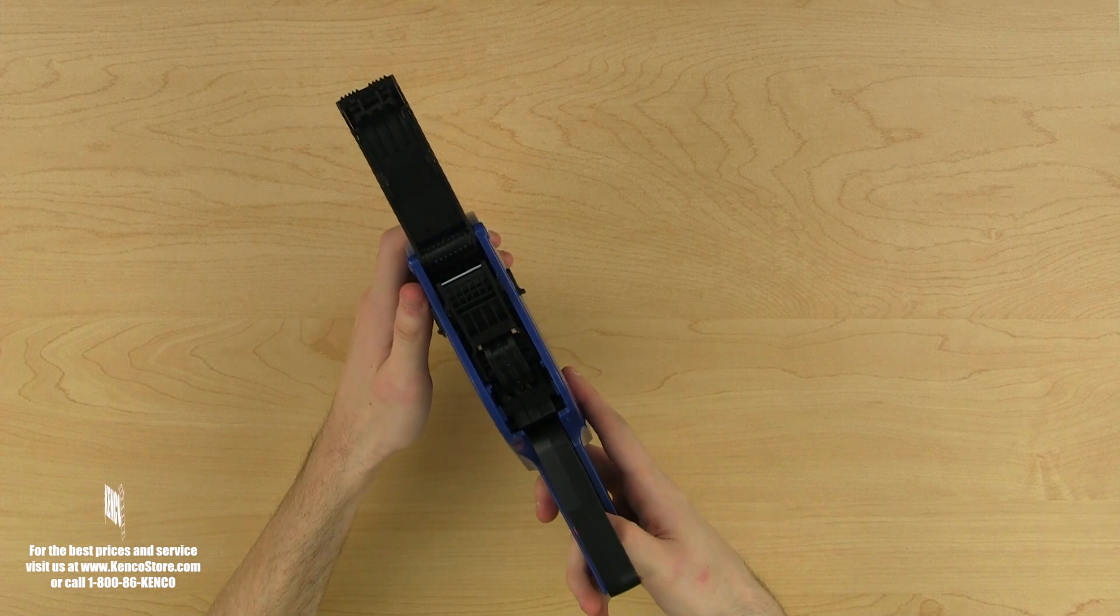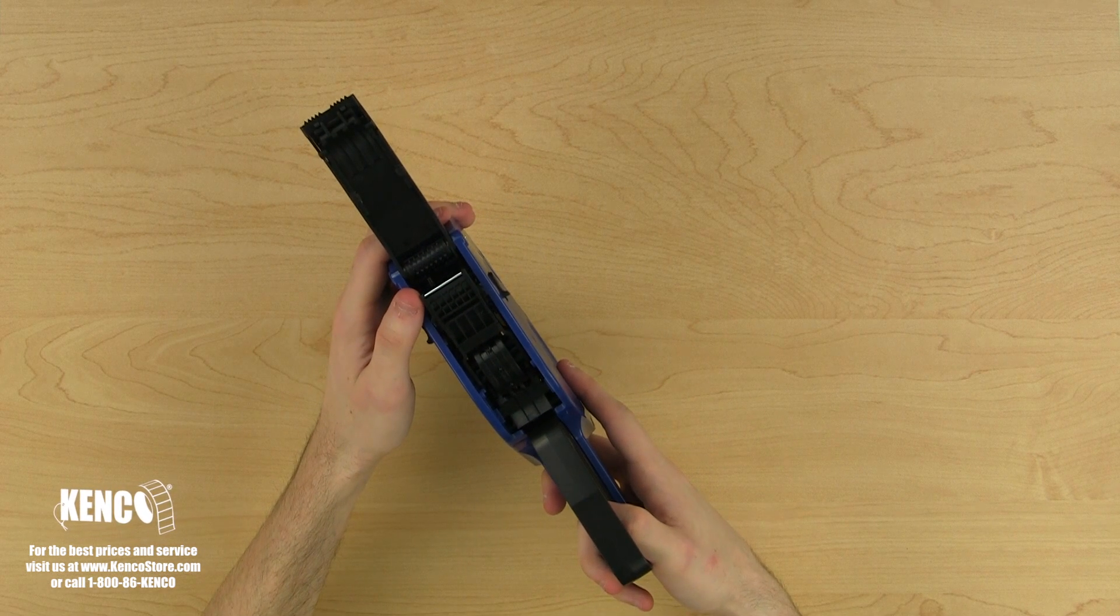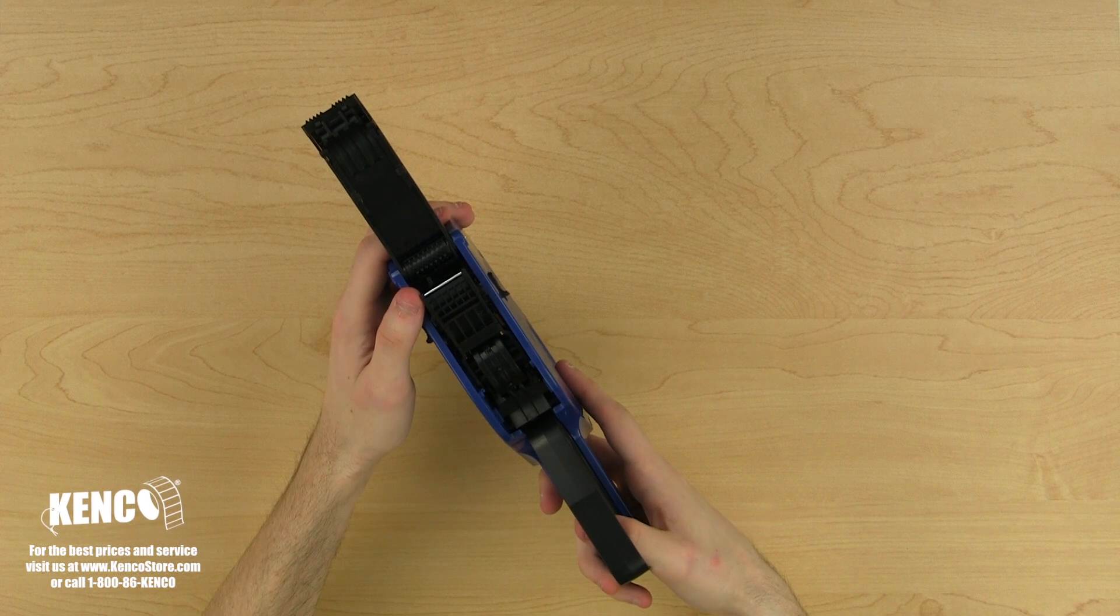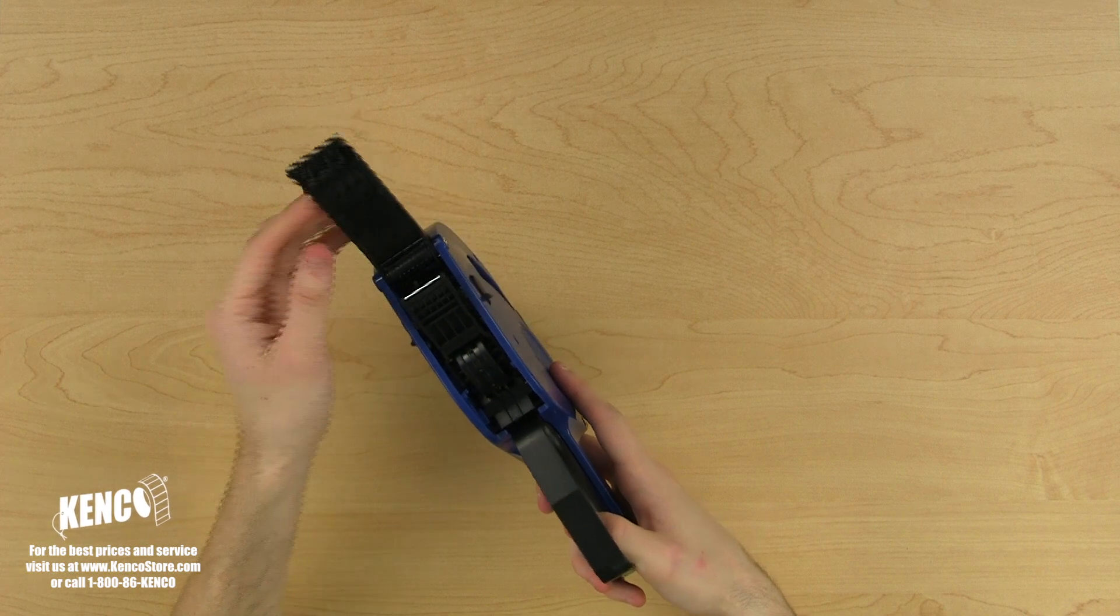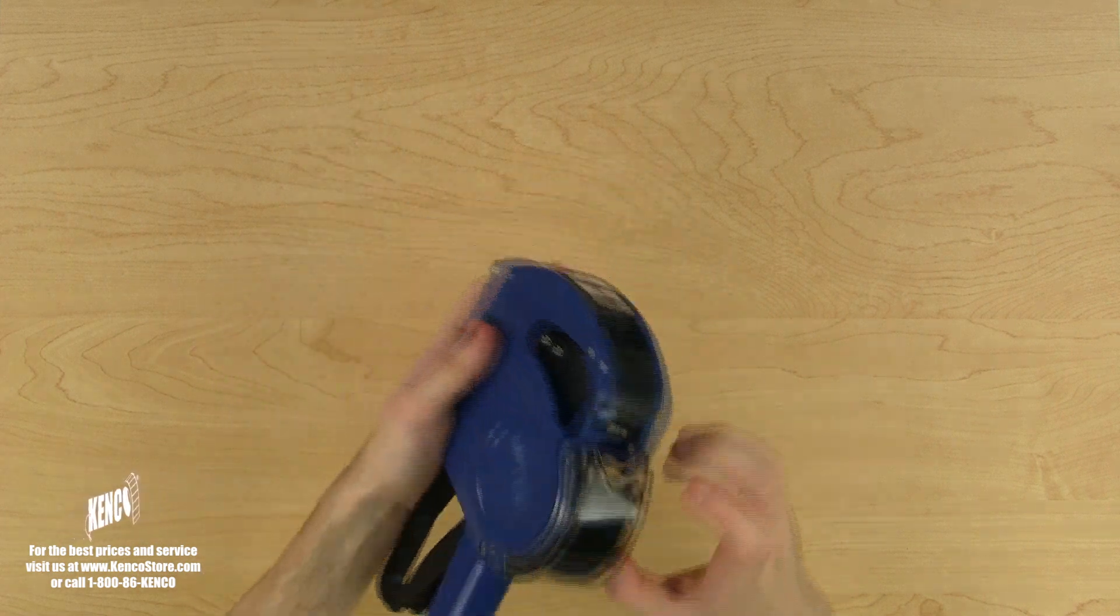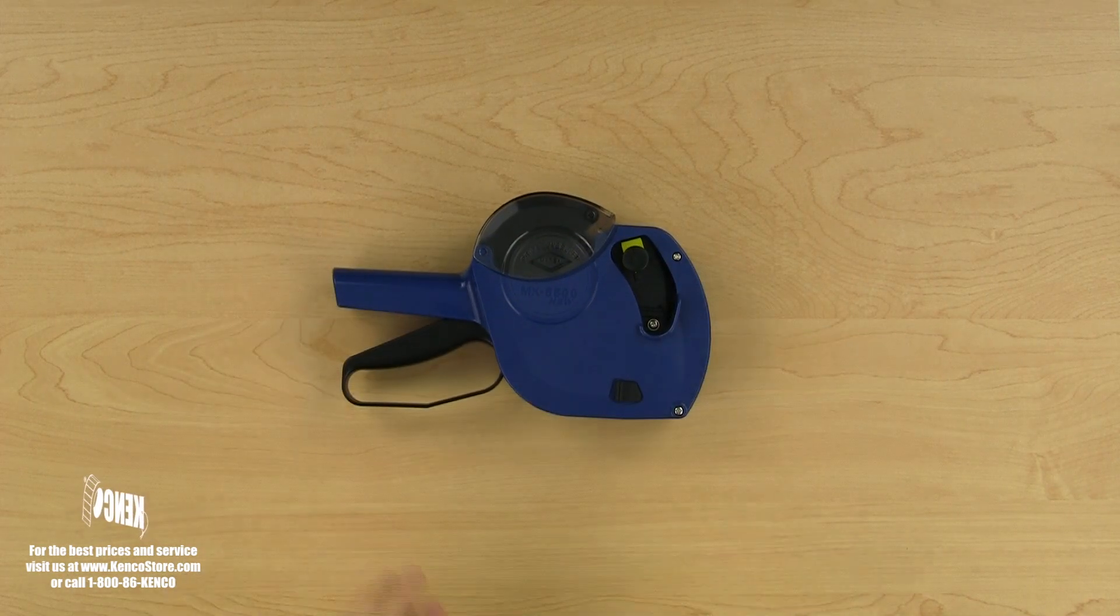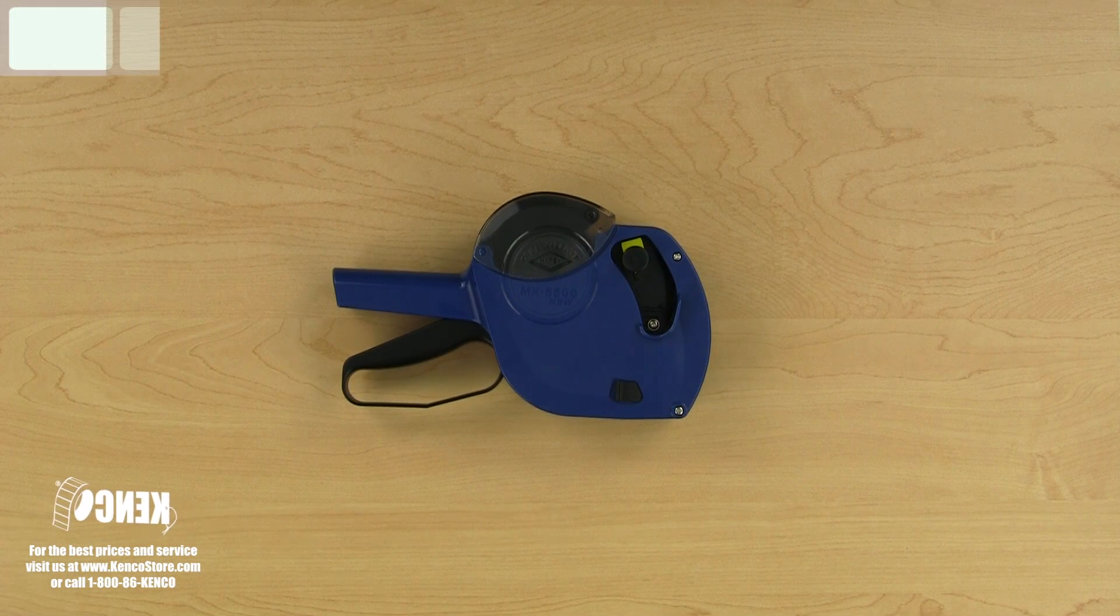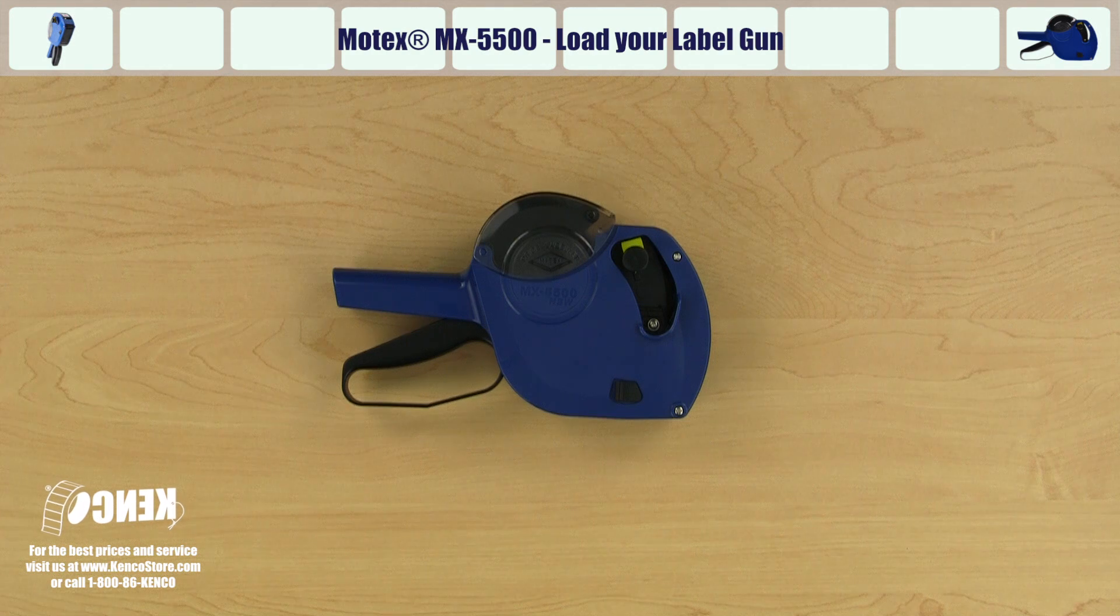Below the nip roller, you will see the pressure plate. The pressure plate will help maintain consistent tension when the label gun is in use, giving it a smooth operation. Below the pressure plate, you will see the advancing mechanism. Notice the sprockets on the wheel? The sprockets line up with the holes on the labels so the advancing mechanism can feed one label every time you squeeze the trigger. Now that we are more familiar with the various components, let's see how to quickly and properly load the new MoTeX MX5500.